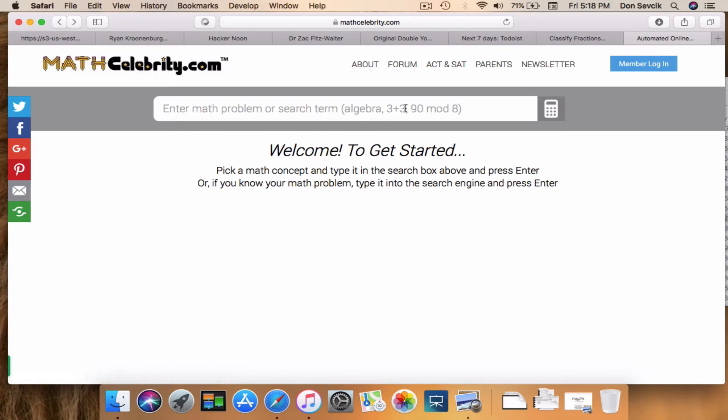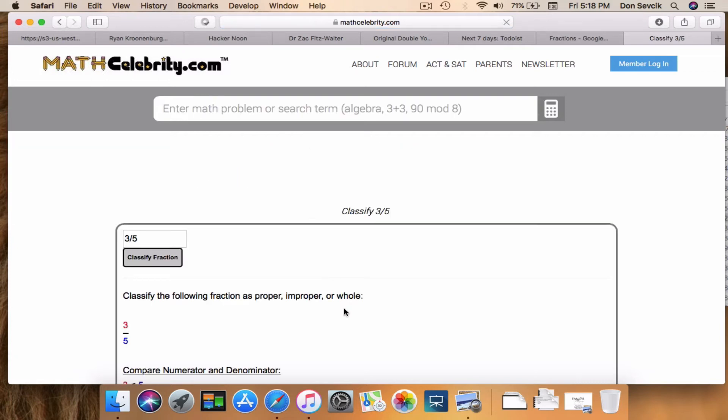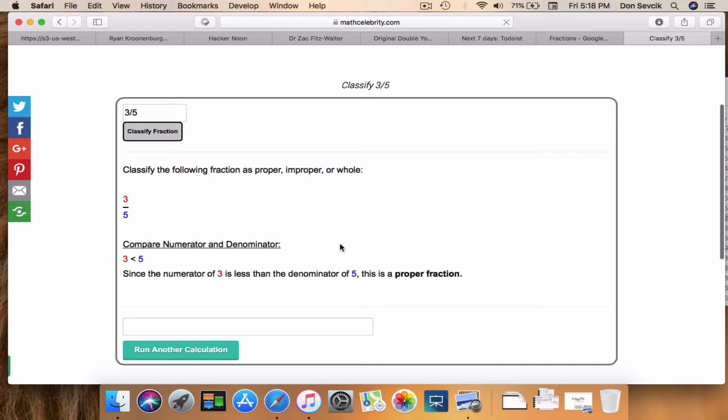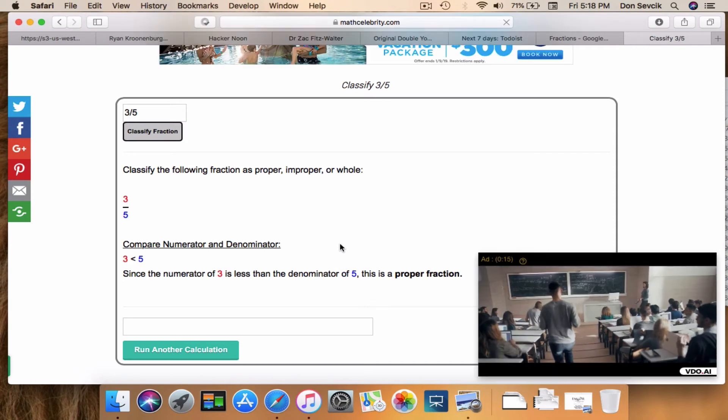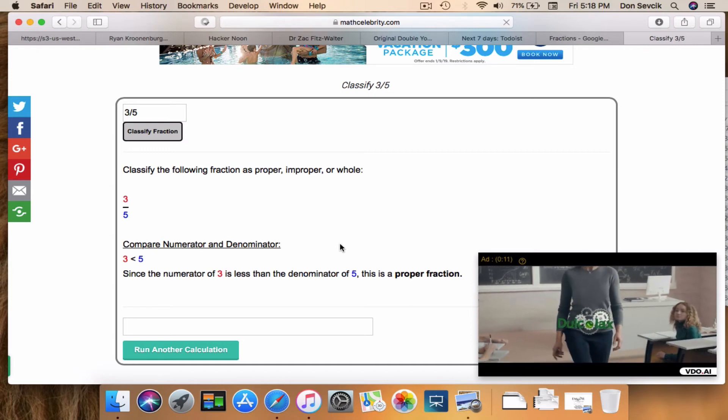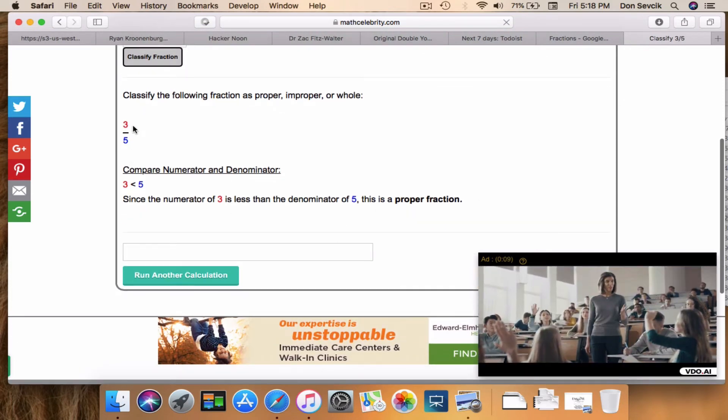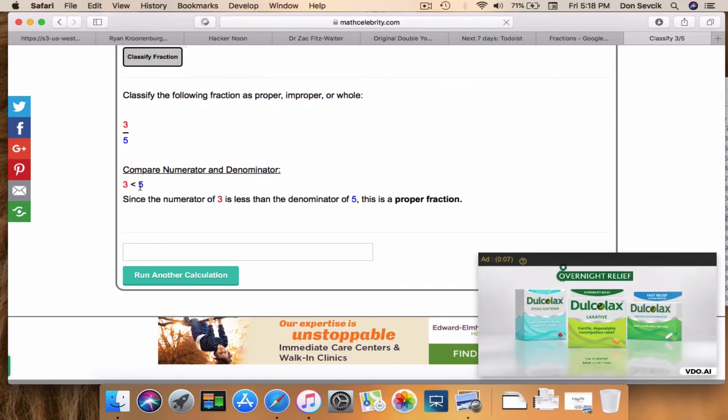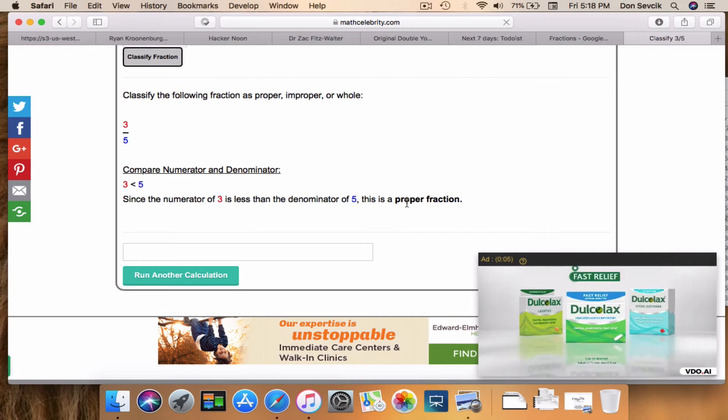So here is the calculator. If you're on the mathcelebrity.com website, you're going to go up here and you're going to type classify three-fifths. And it's going to walk you through exactly what we did in the video. The nice thing about this though, is you can type in any fraction on our calculator. Because three, the numerator, is less than five, we've got a proper fraction.